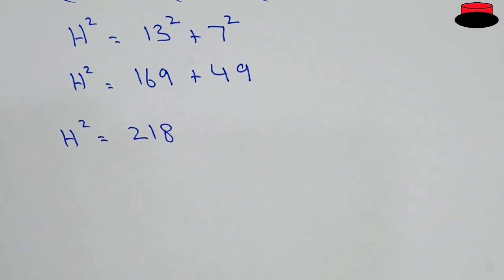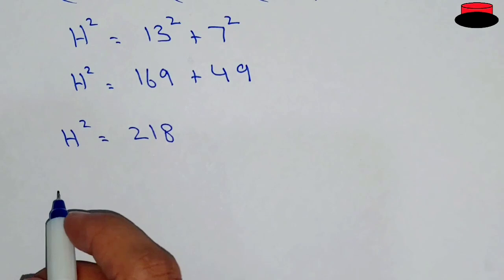Now for finding out the radius, first of all we have to find out the diameter. It means the diameter is hypotenuse in this case.